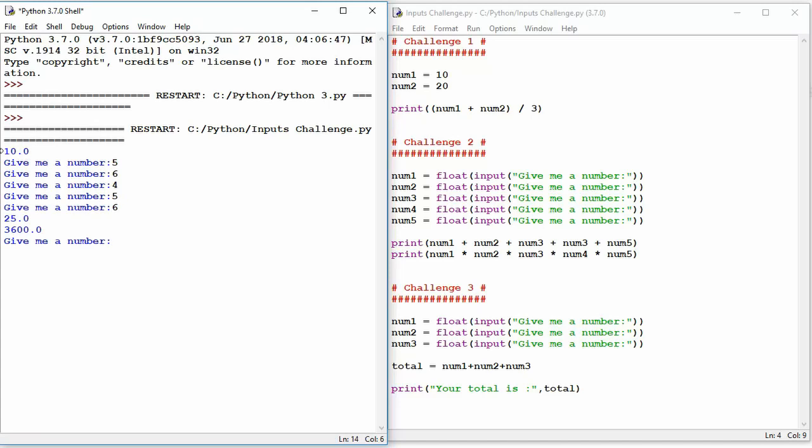The first program is here, the second program is here, and this now is the third program which we're going into. It does look a little bit confusing. Give me a number: five, eight, and nine. And then your total is 22.